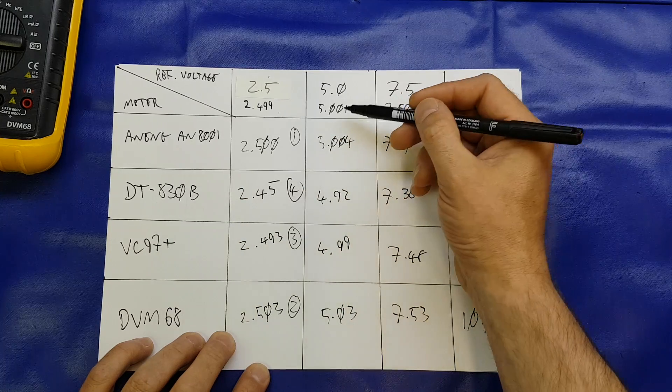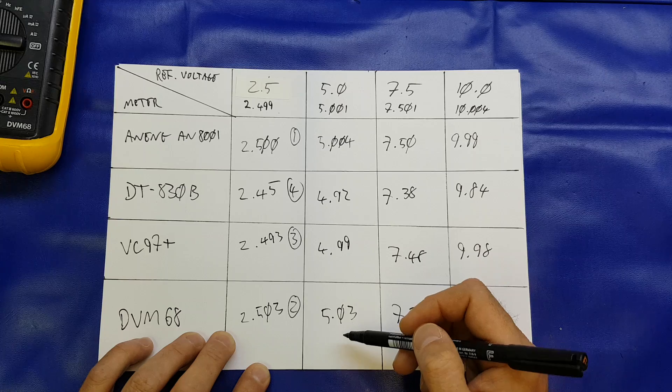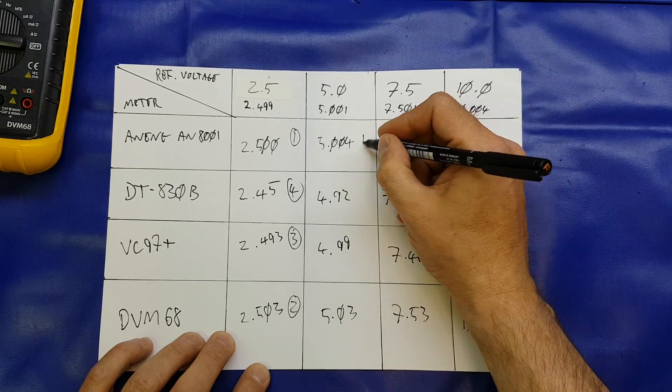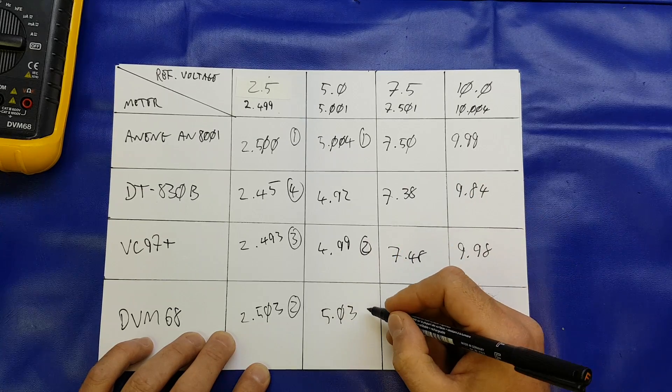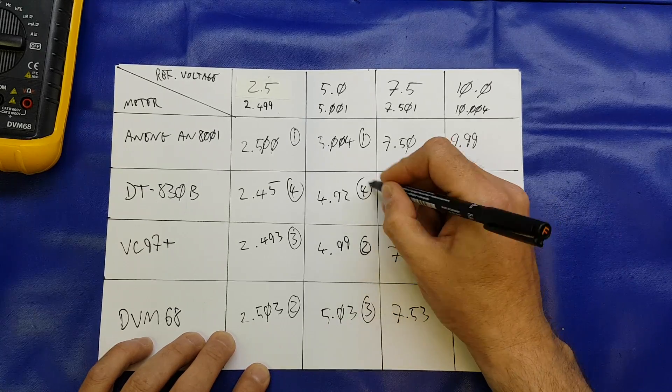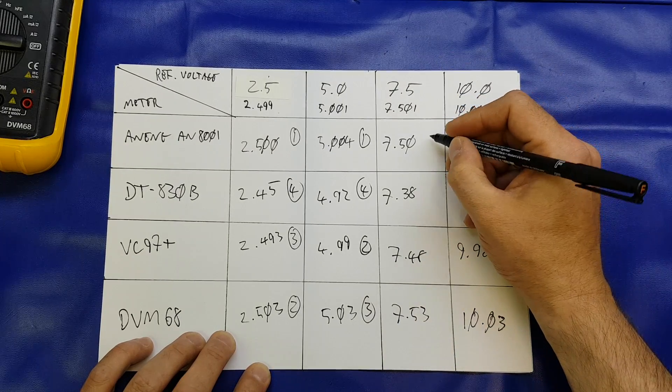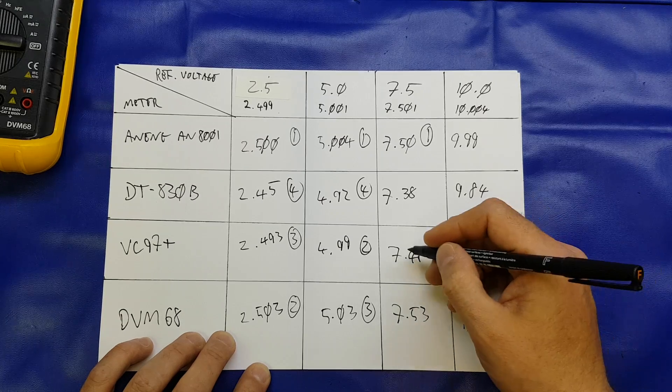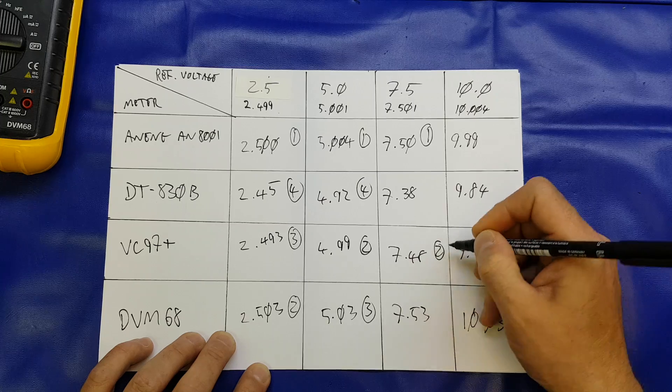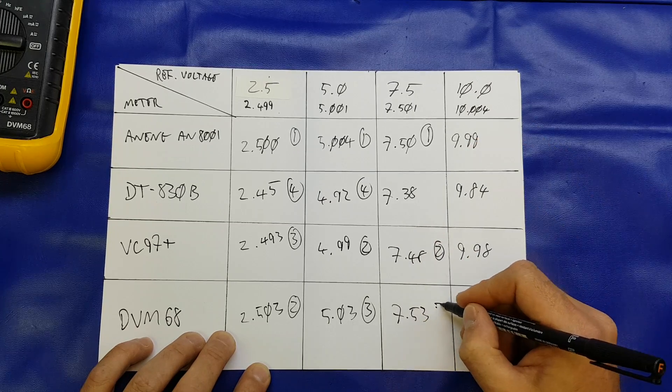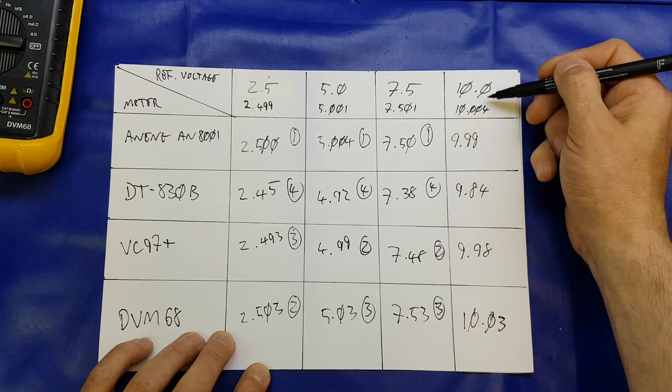So the Aneng on the five volt range, 5.001, 004, that's 0.003, so that's a one, that's a two, and that's a three, and that's a four. Seven and a half volt, absolutely bob on on that, that's 0.02, so that's a second place, that's a third, and again, 830 is in the fourth position.